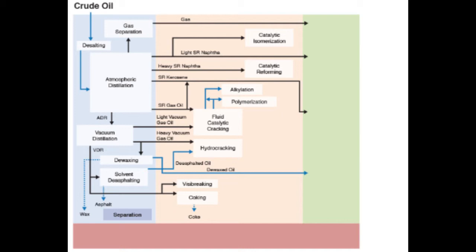Starting from the top again: light straight-run NAFTA is fed to catalytic isomerization; heavy straight-run NAFTA is sent to the catalytic reforming unit; straight-run gas oil and light vacuum gas oil are fed to fluid catalytic cracking. Byproducts from fluid catalytic cracking are sent to polymerization and alkylation units. At the bottom, de-asphalted oil and heavy vacuum gas oil go through hydrocracking, and the VDR can go through visbreaking or coking.